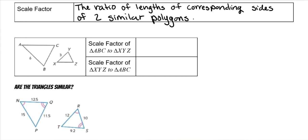We have this example with triangle ABC and triangle XYZ. It gives you side AB, and AB corresponds to XY on the other side. Going from ABC to XYZ means you put ABC on top, which is 6, over XYZ on the bottom, giving a scale factor of 2. If you go in reverse, XYZ comes first and goes on top, and ABC goes on the bottom, giving a scale factor of 1/2.